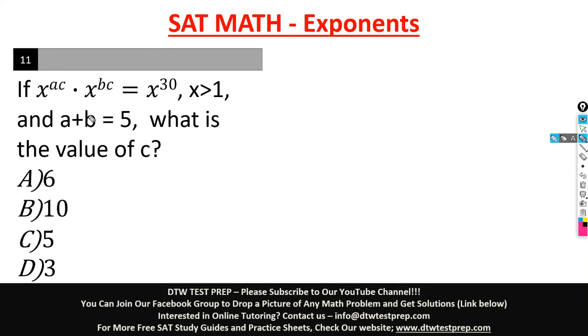Just look at it closely. It says if x raised to the power ac multiplied by x raised to the power bc is equal to x raised to the power 30, where x is greater than 1, and a plus b is equal to 5. They're giving you clues already. What is the value of c?